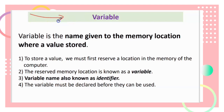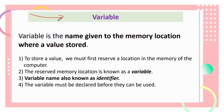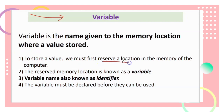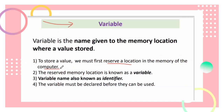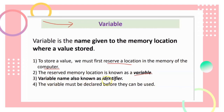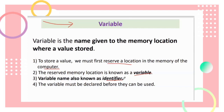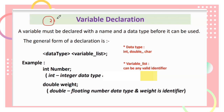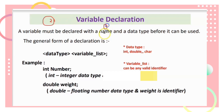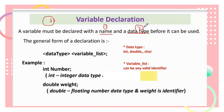Next, we see what a variable is. A variable is the name given to a memory location where a value is stored. To store a value, we must reserve a location in the memory of the computer — this reserved memory location is known as a variable. A variable name is also known as an identifier, and variables must be declared before they can be used.